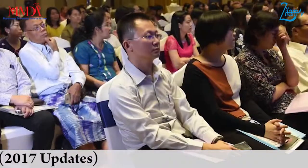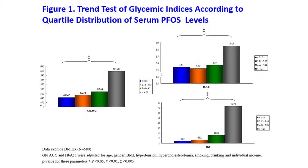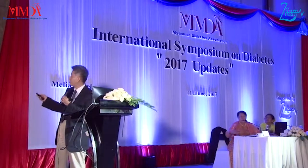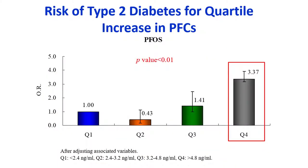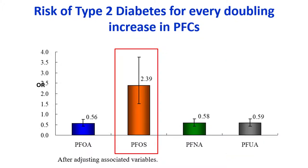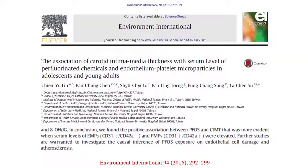At different time points, higher levels of PFMA increase glucose levels, and PFMA is negatively associated. The risk associated with PFMA is an odds ratio of 3.37, and here an increased risk of 2.39 for every doubling increase in PFMA exposure.